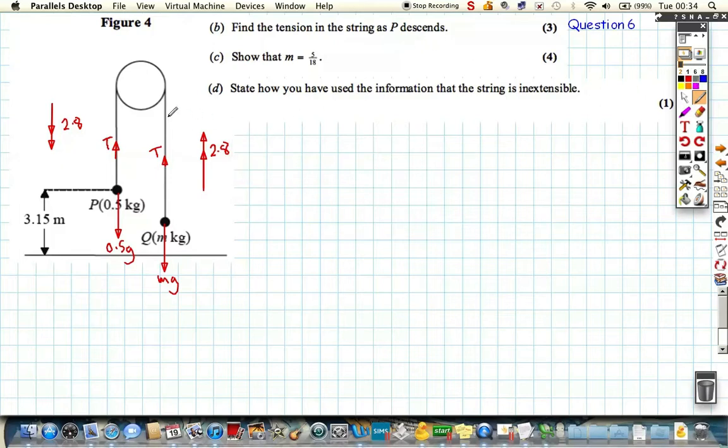We want to find the tension in the string, so we can consider the particles in two parts. We can look at particle P and Q separately, looking at the left and right-hand side of the pulley. If we look at Q, we're going to have the unknown T and the unknown M in any resolution. So let's look at P to find the tension. If we just consider particle P, we're going to have an equation with one unknown. Resolving in the vertical direction, the way the particle is accelerating, I'm going to get 0.5g acting downwards.